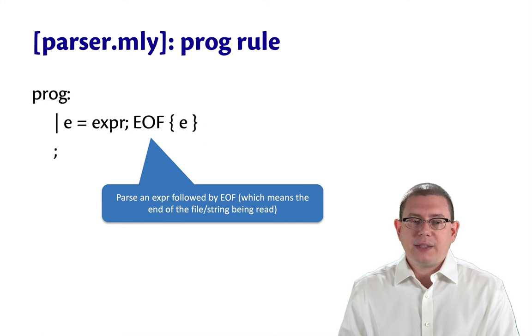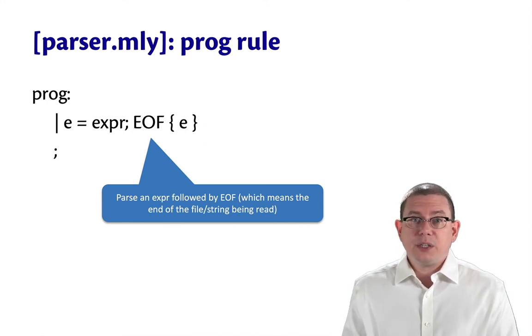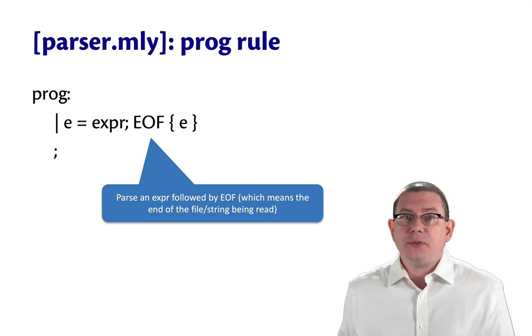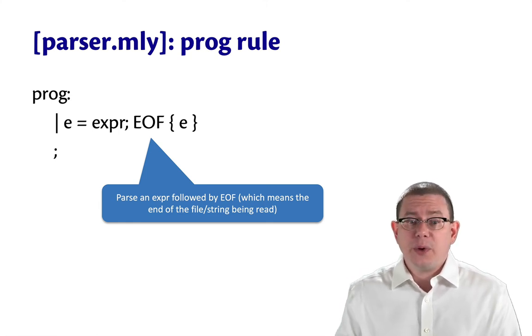Finally, the very highest level rule here was for parsing a program. We parsed an entire expression, and then that had to be the end of the file or the end of the token stream there, the end of the string that we were parsing.